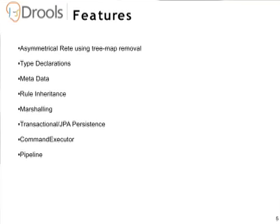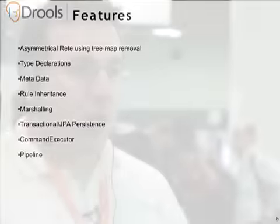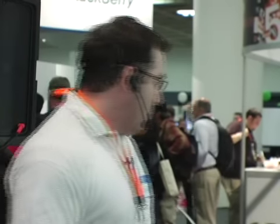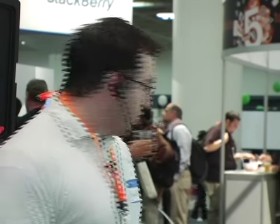We're now transactional using JPA persistence. That work was done as an extension of the marshalling and is necessary for the flow work to give us transactions and persistence. We've also got what we call the new command executor and pipeline. The command executor allows you to script your engine and is used in combination with the pipeline to set up services — working with rules as a service, working remotely, with innovation to control what comes back out rather than always returning all objects.